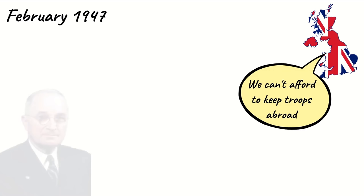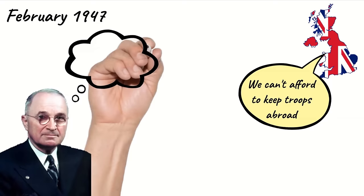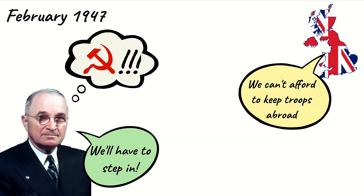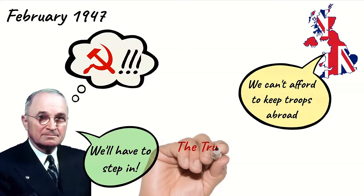In February 1947 Britain informed the USA that they could no longer afford to keep troops in Greece and Turkey. This alarmed Truman because he knew that if Britain withdrew, these countries were likely to become communist. Therefore he decided that the USA would have to get involved in Europe to prevent Stalin from spreading communism. This belief became known as the Truman Doctrine and formed the basis for the next 50 years of politics in Europe and America.